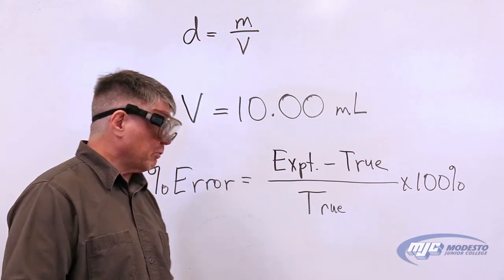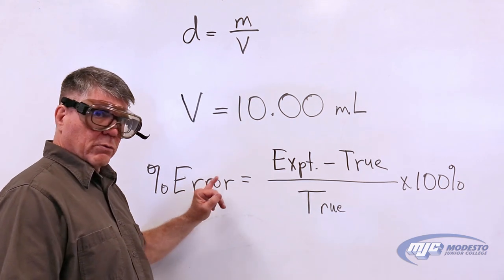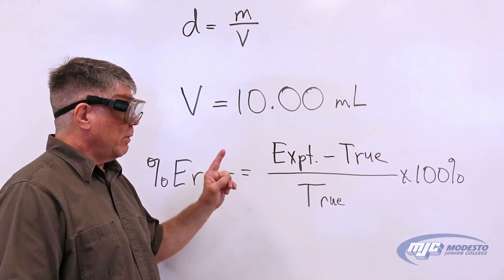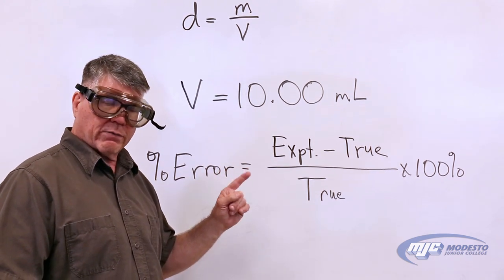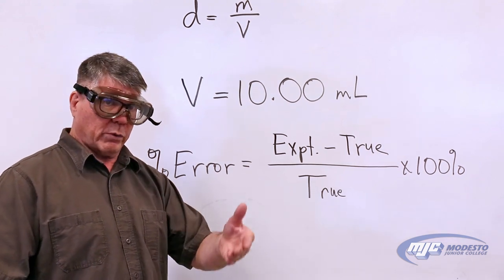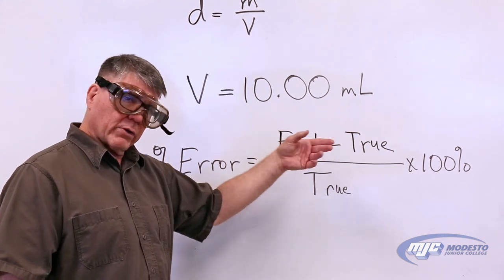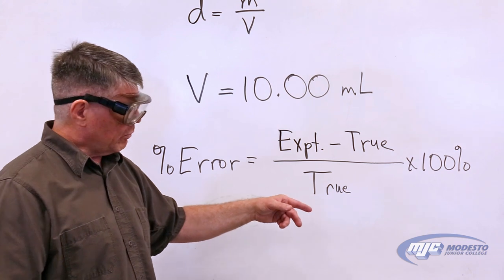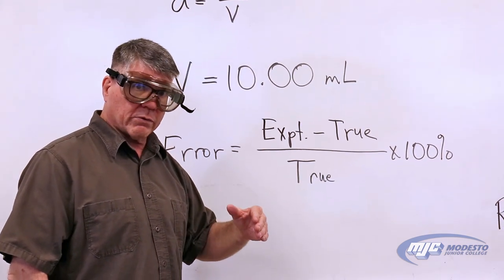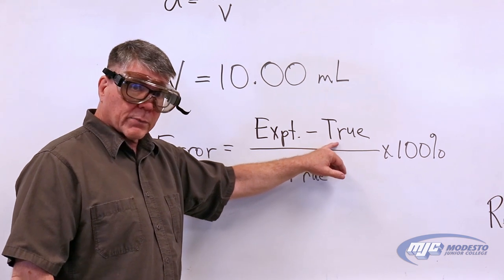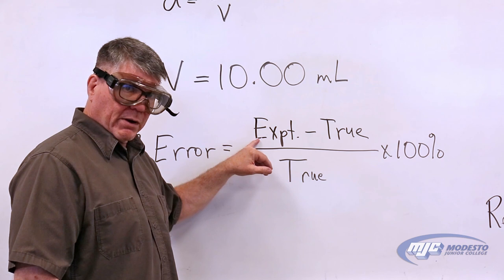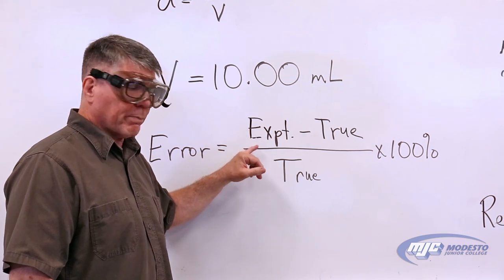Accuracy is measured by percent error. There's a table in your lab that gives you the true value for the density of water at different temperatures, because density changes with temperature. You look up the density of water at whatever the temperature of your water is — that'll be your true value. The average density that you get from your measurements will be the experimental value.